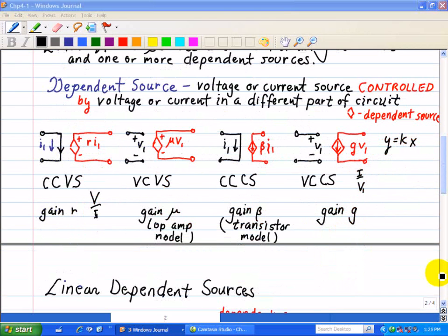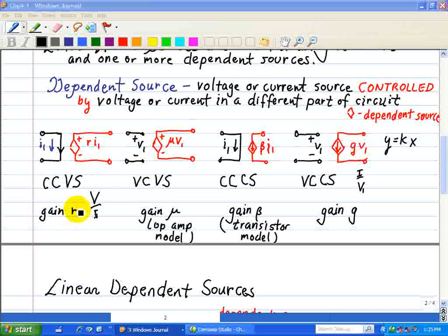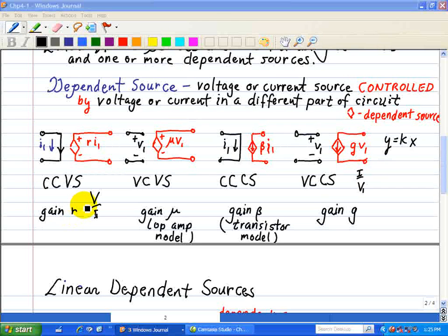For CCVS and VCCS, the parameter R is called the trans-resistance, and the parameter G is called the trans-conductance.